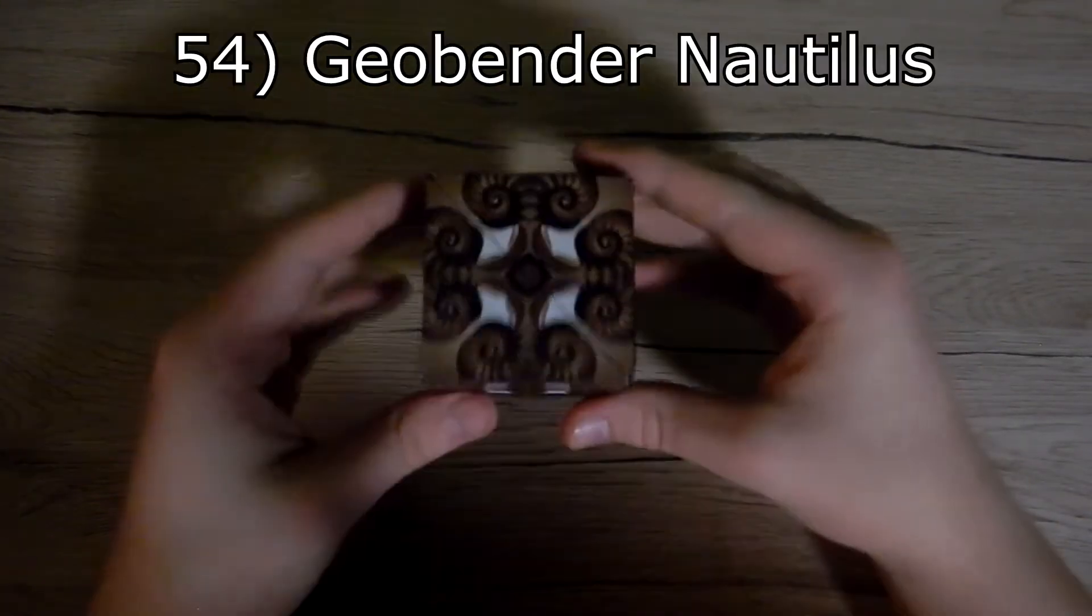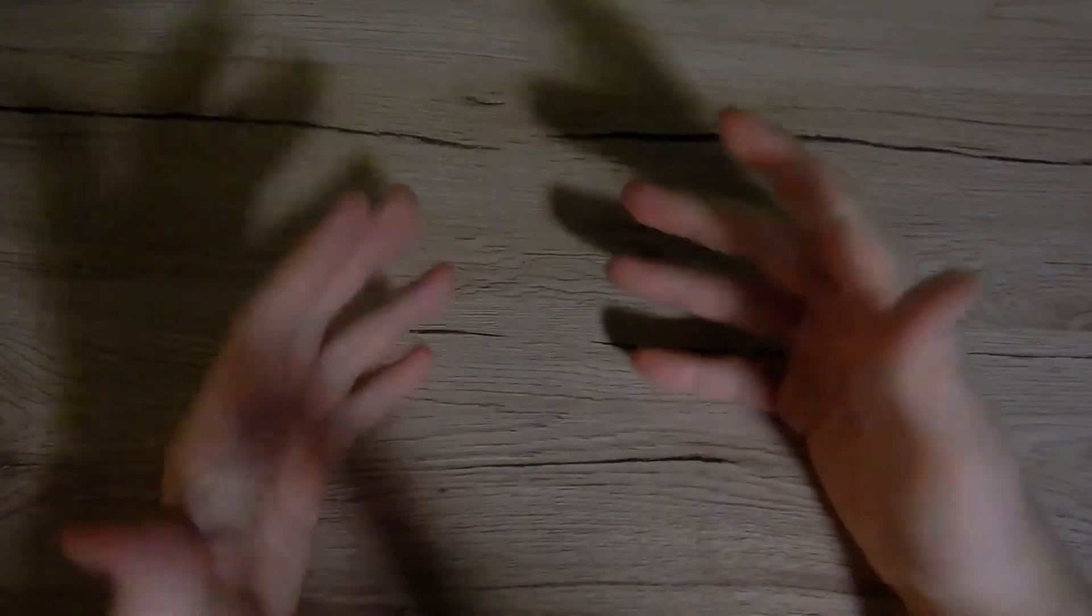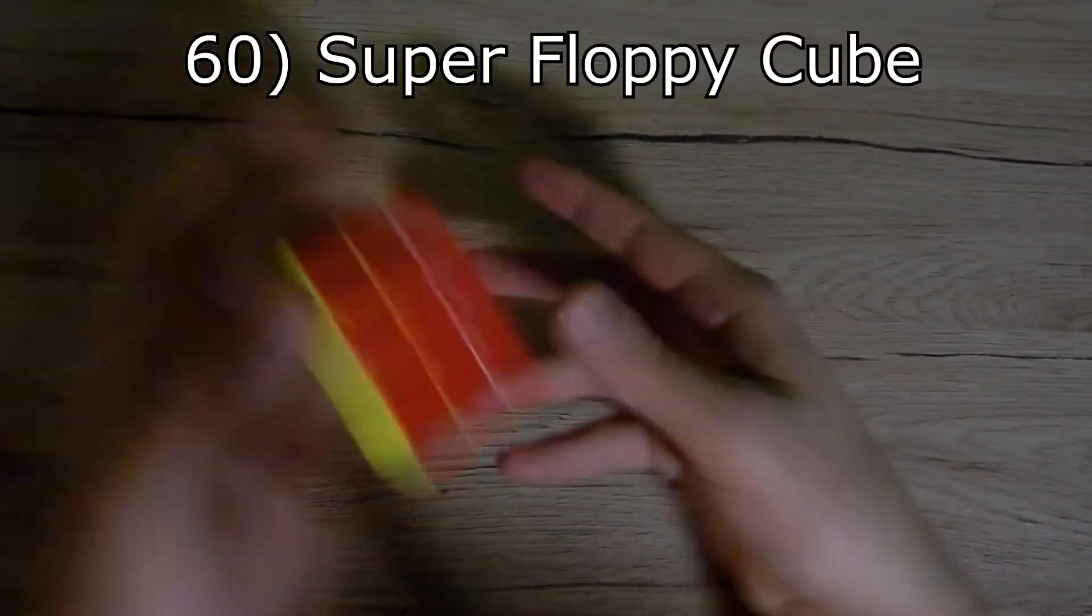Now for the GeoBender cubes. First we have Word, Beast, Nautilus, Surfer, primary, primary two, abstract, and abstract two.